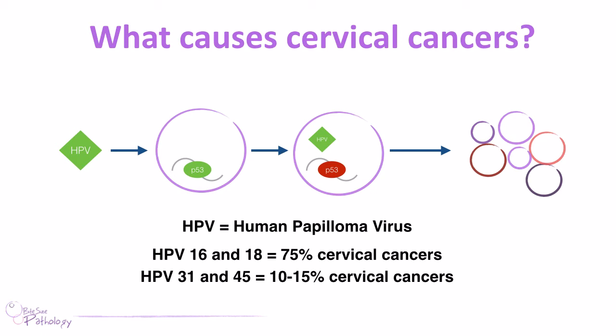HPV has over 100 different strains, but the most oncogenic — meaning most likely to cause cancer — are strains 16 and 18, which account for about 75% of cervical cancers. HPV 31 and 45 are responsible for about 10 to 15% of the remaining cervical cancers. The HPV virus, transmitted through sexual contact, is the main culprit in developing cervical cancer.